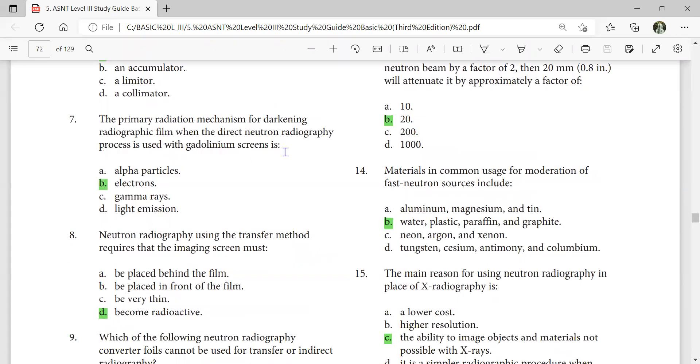There is always a screen with neutron radiography, no film without screen. Materials in common usage for moderation of fast neutron sources include water, plastic, paraffin, and graphite. Neutron radiography using transfer method requires the imaging screen must become radioactive, because transfer method is used for radioactive materials. So anything you use will become radioactive.